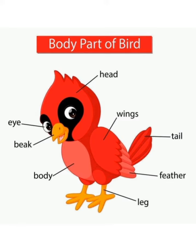Let us understand the parts of the bird. As it has been shown, a bird has a head, wings, tail, feather, leg, whole body, beak, and eye. And in the previous video, you have seen that under the leg, the yellow part is claws. I hope you have understood the parts of a bird.